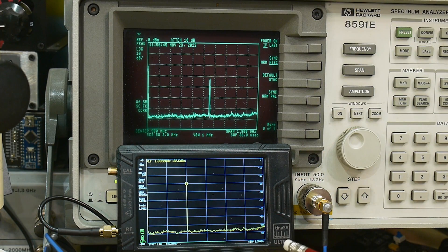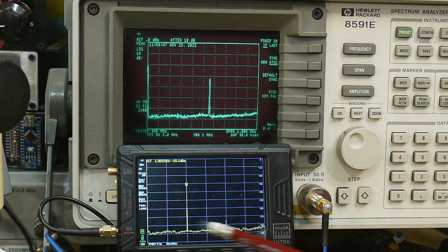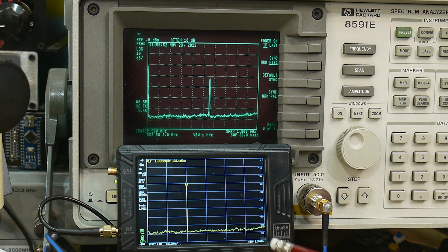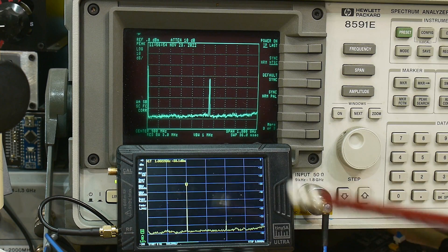All right, this is the TinySA Ultra, and it comes with a 800 megahertz maximum frequency until you enable the Ultra mode.